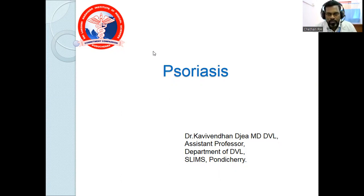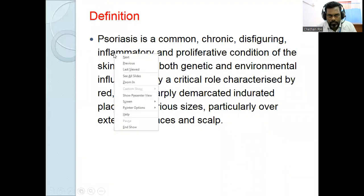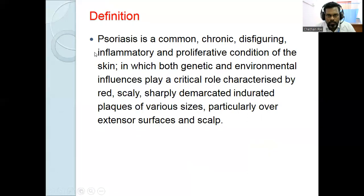Good morning. Today we will discuss psoriasis. The definition of psoriasis is an autoimmune inflammatory papulosquamous disorder of unknown etiology associated with systemic manifestations. Clinically it is characterized by sharply demarcated erythematous plaques with silvery white scales. Most common sites involved are scalp, extensor aspect of extremities, elbows, knees, and lumbosacral region. It can also involve palms and soles.